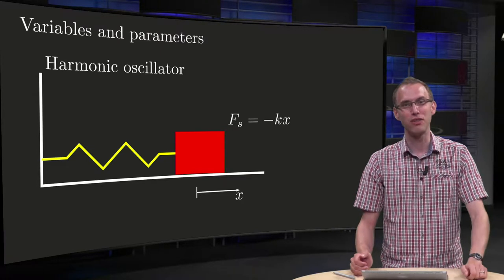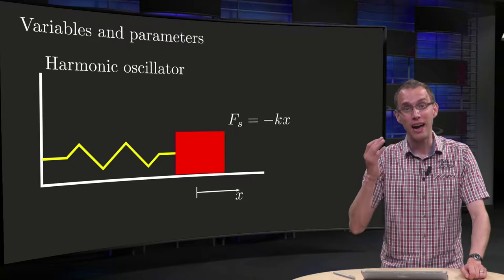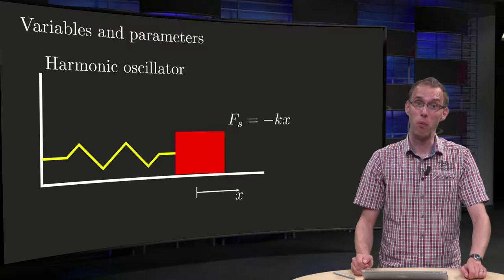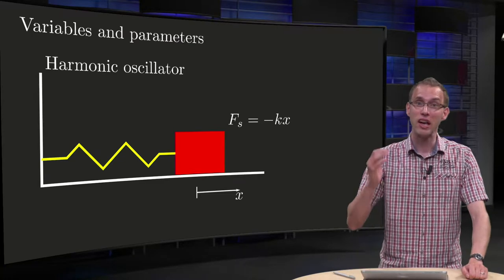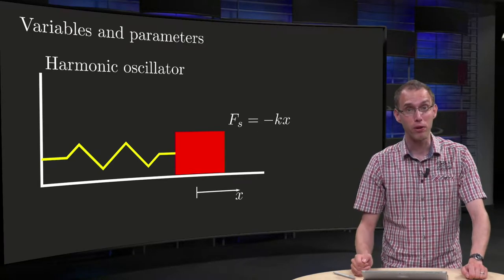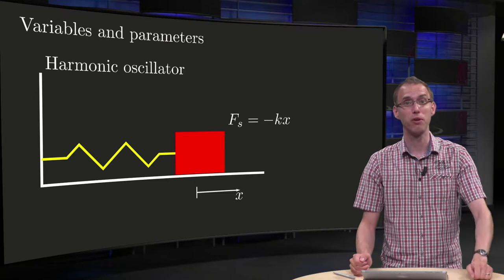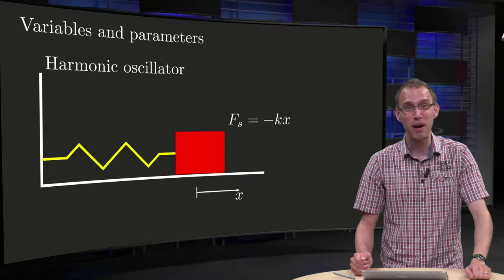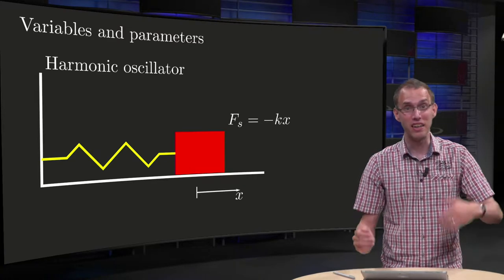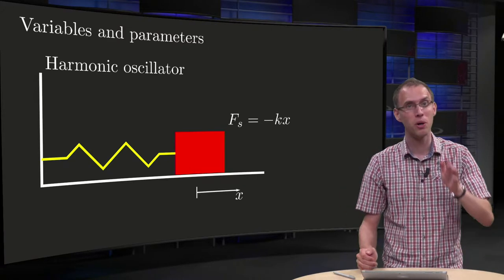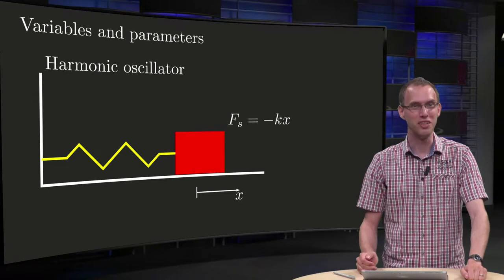We partly understand the confusion of the students. A dependent variable in one model may be an independent variable in another. A variable in one model may be a parameter in another model. This is highly dependent on the model you have in mind. But what do we mean by dependent and independent variables and parameters? That's what you will learn in this video.